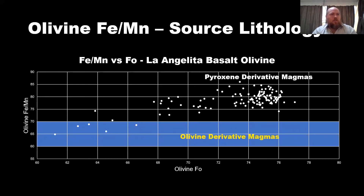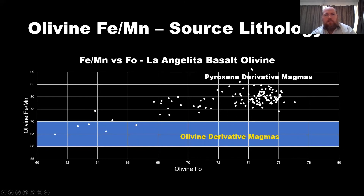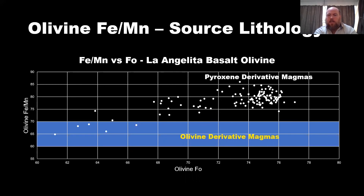Olivine that crystallizes from melts of pyroxenite shows elevated iron over manganese. We've done a study looking at the La Angelita basalt olivines, and they have elevated iron over manganese as you can see in this plot. Up here in this region indicates olivine derived from pyroxenite derivative magmas; if they were derived from a peridotite magma they would probably lie within this field. This is good evidence to us that there is pyroxenite in the source of these magmas.